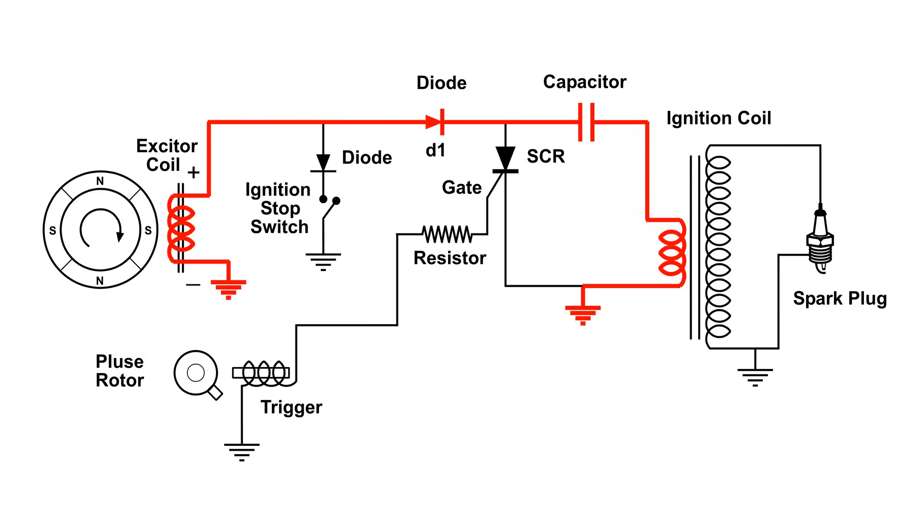Now the magnets have rotated and induced a voltage in the exciter coil with this polarity: negative on the bottom, positive on the top. When that happens, D1 will conduct, and here you can see the charge path for the capacitor.